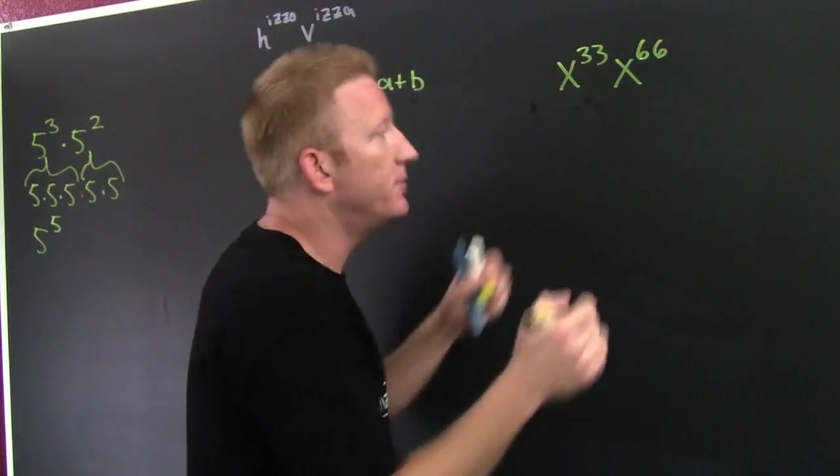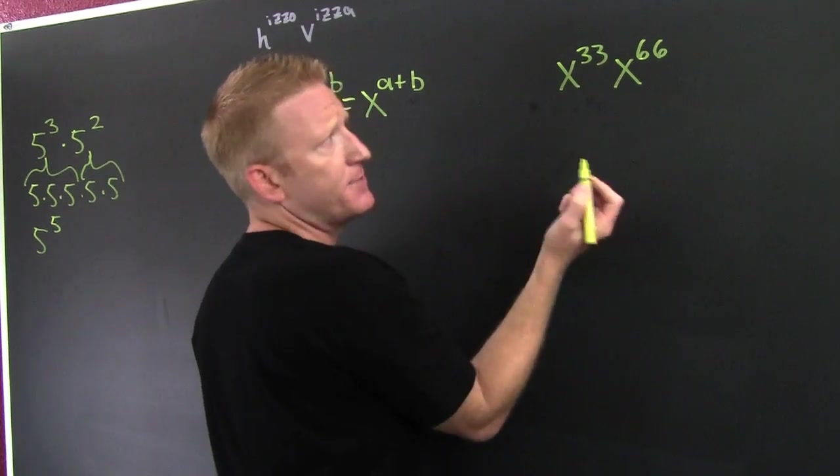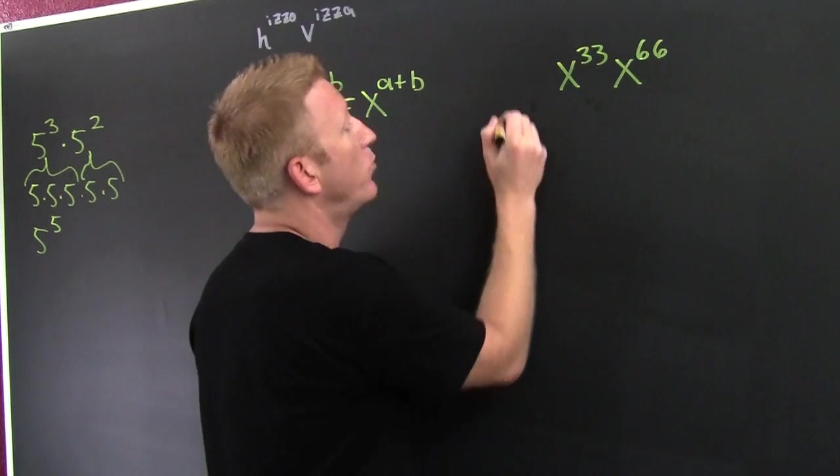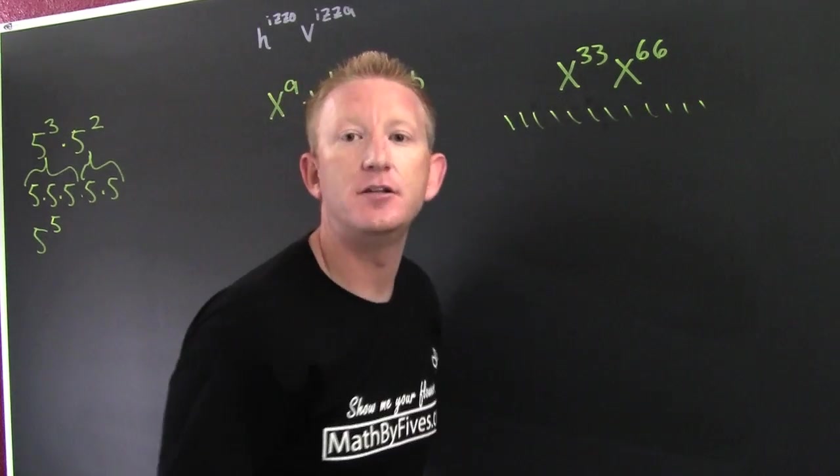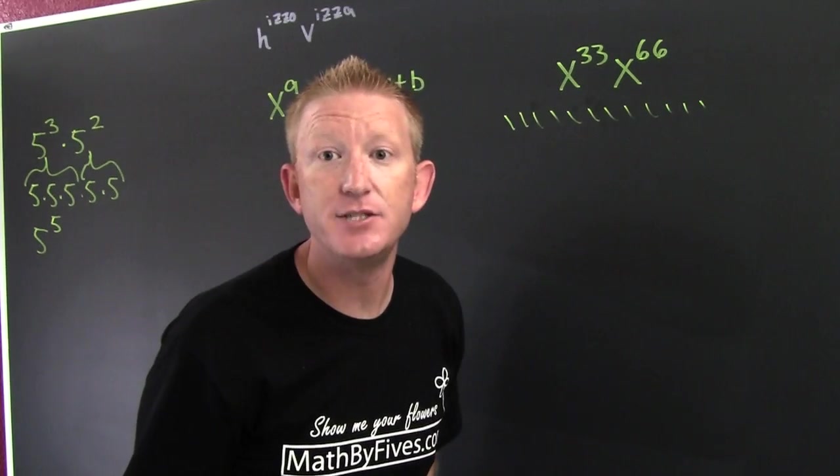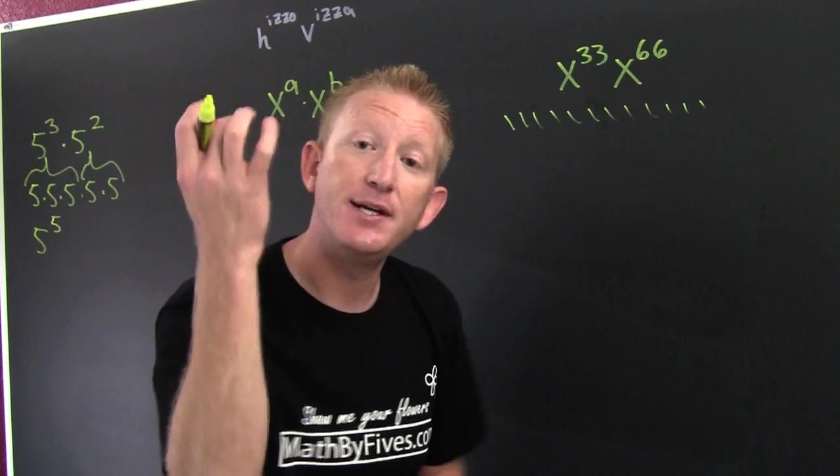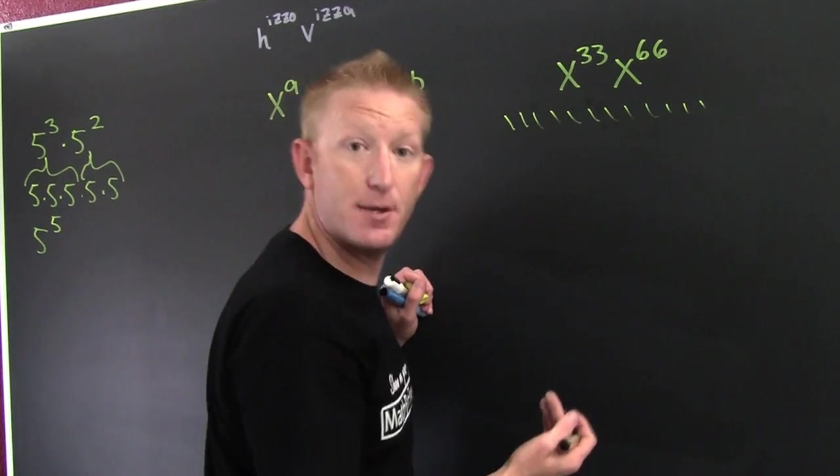When we get to this example, I could expand them out like I did with the fives. One, two, three, four, five, six, seven, eight, nine, ten, eleven, twelve - oh my god, you're not going to really do that. This is necessary and then we use the power rule.